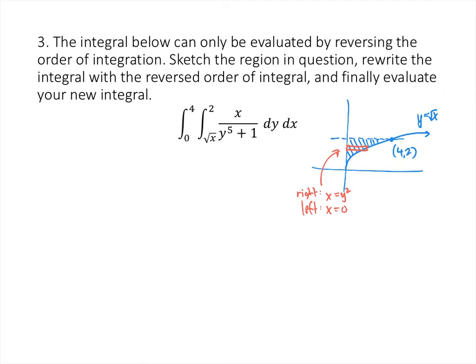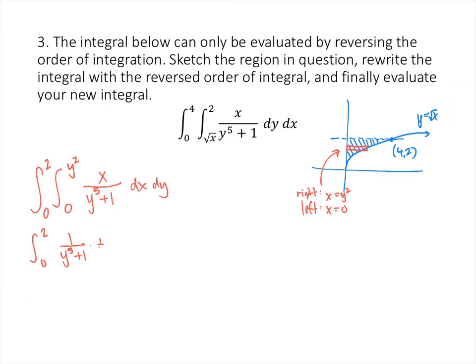So the integral I get has the inner integral from 0 to y squared, and the outer integral — the y integral — goes from the low y value of 0 up to the high y value of 2. I'm still integrating the same function, x over y to the fifth plus 1, but now the order of integration is dx dy. Since y to the fifth plus 1 is just a constant multiple, the antiderivative is going to be 1 over (y to the fifth plus 1), and that constant multiple stays, multiplied by the antiderivative of x, which is one-half x squared.